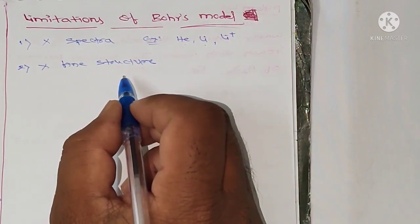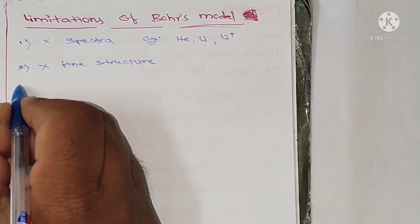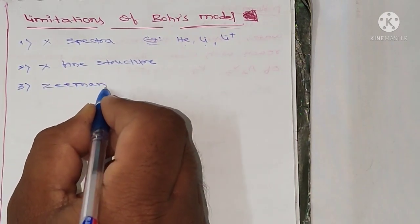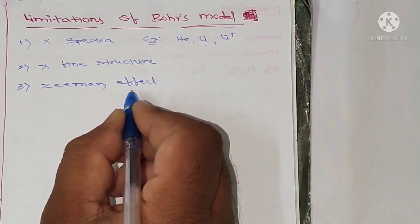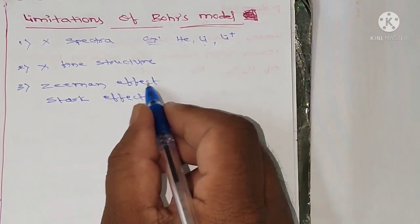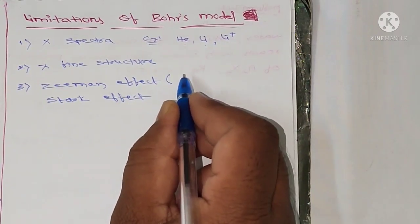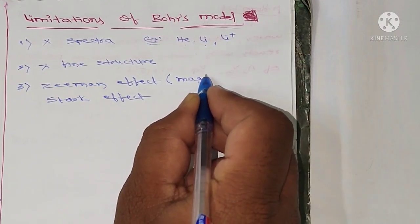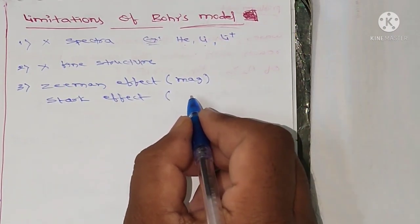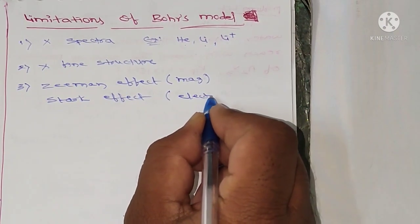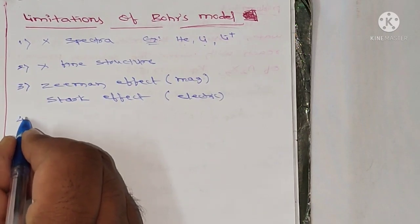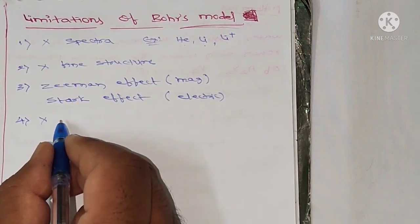Bohr's model cannot explain the fine structure in atomic spectra. It also cannot explain the Zeeman effect — the splitting of spectral lines in a magnetic field — and the Stark effect — the splitting of spectral lines in an electric field.